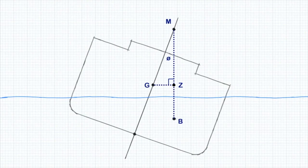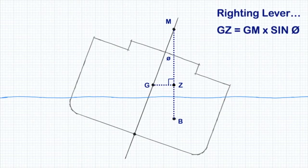Now take a look at this diagram. Remember that we were able to calculate the righting lever from G to Z using the formula GZ equals GM times sin theta.